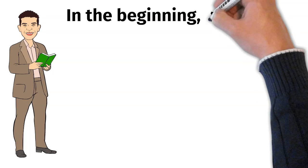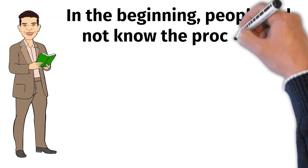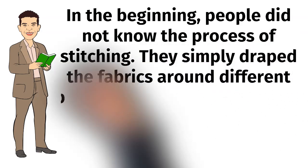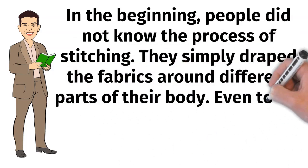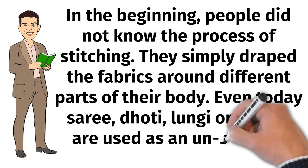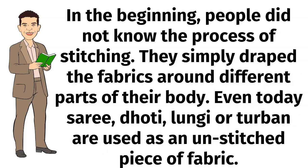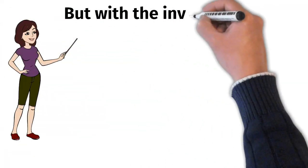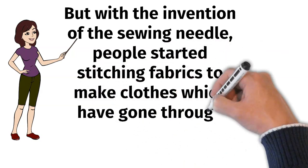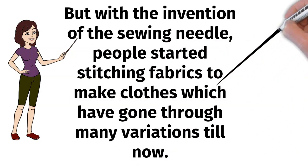In the beginning, people did not know the process of stitching. They simply draped the fabrics around different parts of their body. Even today, saree, dhoti, lungi or turban are used as an unstitched piece of fabric. But with the invention of the sewing needle, people started stitching fabrics to make cloths which have gone through many variations till now.